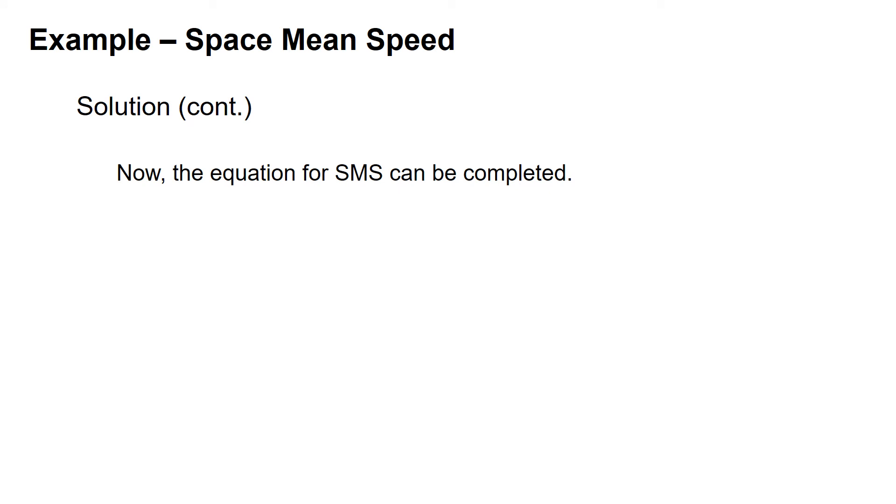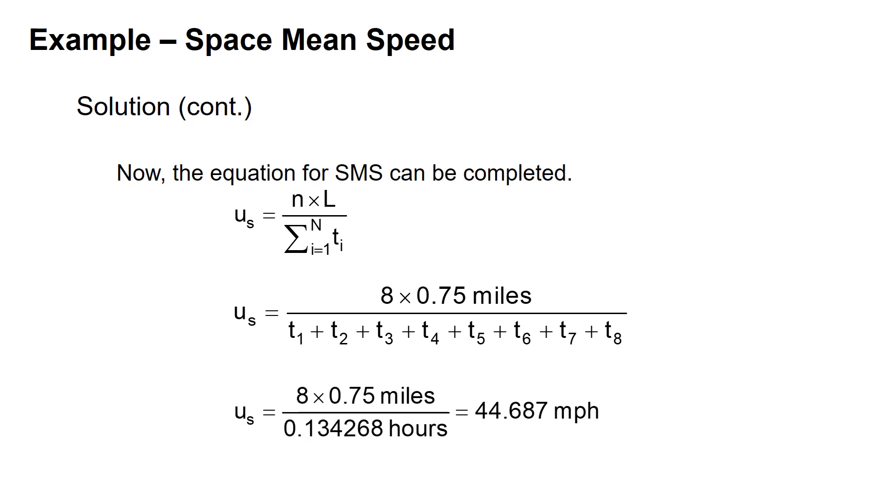Now we can solve for our Space Mean Speed. Starting with our equation where the Space Mean Speed equals our sample size times the length over the sum of the individual travel times. U sub S is equal to 8 times 0.75 miles over the summation of those 8 travel times. The Space Mean Speed is 8 observations times 0.75 miles divided by total travel time of 0.134268 hours, giving us a Space Mean Speed of 44.687 miles per hour. That is answer A.